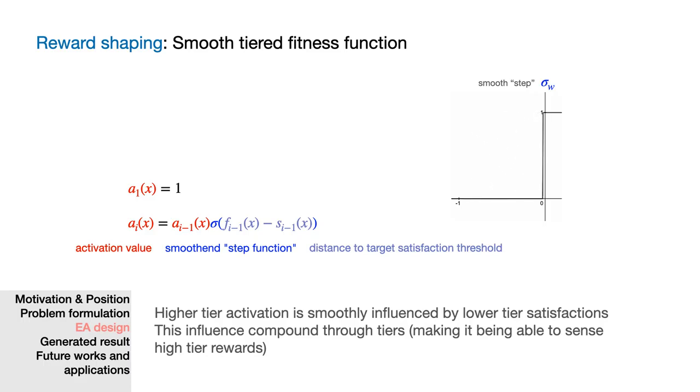Notice that using this sigma instead of the unit step function encourages the model to not focus so much on high-tier at the beginning, but gradually shifting its attention to high-tier objectives as low-tier ones are met.